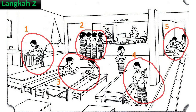Seterusnya, langkah yang kedua, kita perlu bulatkan aktiviti ataupun perbuatan yang terdapat di dalam gambar. Kemudian, kita labelkan nombornya. Pastikan aktiviti ataupun perbuatan yang kita pilih di dalam gambar itu adalah aktiviti yang kita tahu kata kerjanya, dan aktiviti tersebut biasa kita lakukan ataupun senang untuk ditulis kata kerjanya.